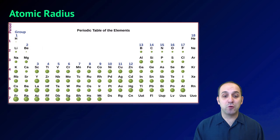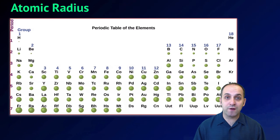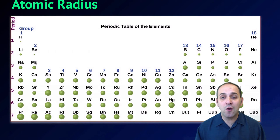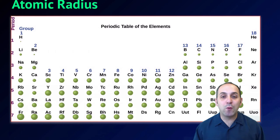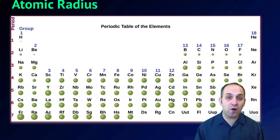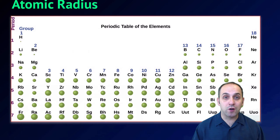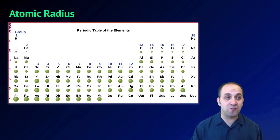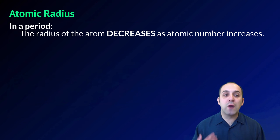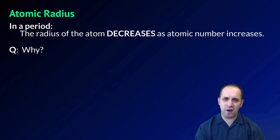This periodic table shows you the atomic radii of the different elements. Since it's covalent radii, we don't see anything for group 18 — because those elements generally do not bond — but we can see the radii for all other elements. As we go across a period from metals to non-metals, as atomic number increases, the radius generally decreases. Similarly, as we go down a group and atomic number increases, the radius generally increases. In a period, the radius decreases as atomic number increases — take a moment and see if you can figure out why.